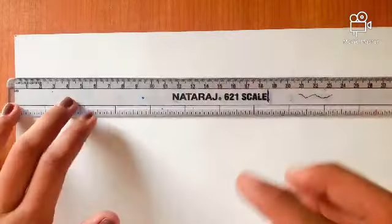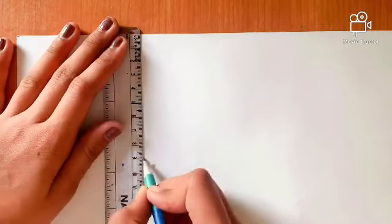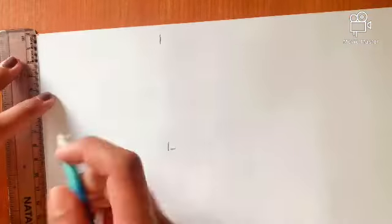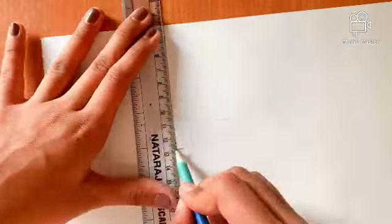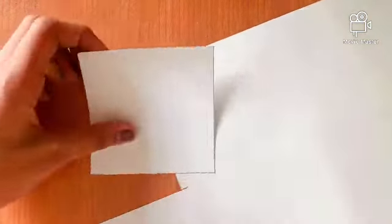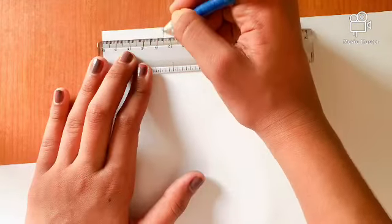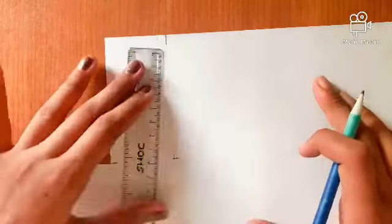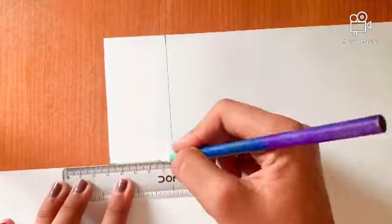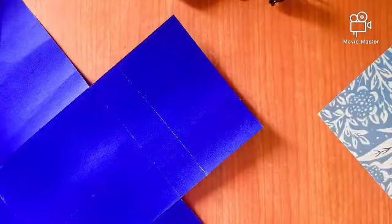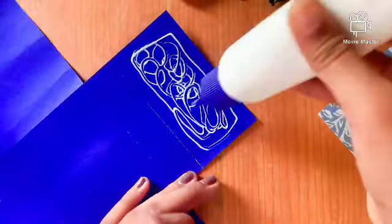Now take a printed sheet and make a box of 9 centimeters and cut it. On the same printed sheet, make a rectangle box of 4.5 by 9 centimeters and then cut that rectangle. Stick both the printed sheets where I am showing you.